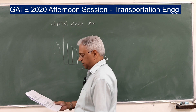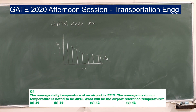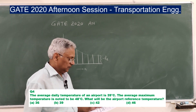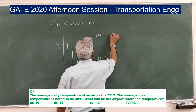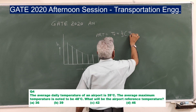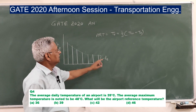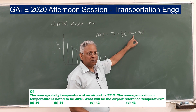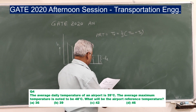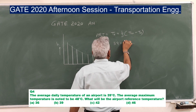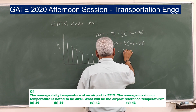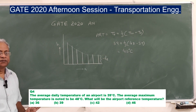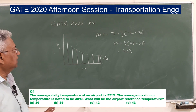Question number four: the average daily temperature at an airport is 39°C and the average maximum temperature is 48°C. What is the airport reference temperature? The formula is: T_ref = T_a + (1/3)(T_m − T_a). Substituting: 39 + (1/3)(48 − 39) = 39 + 3 = 42°C. The correct answer is option C, 42 degrees centigrade.